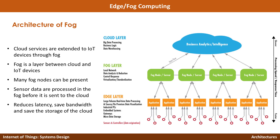In a manufacturing scenario, you might have different equipment with embedded sensors representing edge devices, sending data to a small single-board computer like a Raspberry Pi, which then forwards data to a larger local server within the building. That server does some processing and sends data to the cloud. In this four-layer model, the middle two layers can both be considered fog devices.